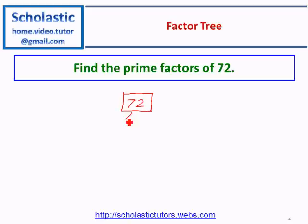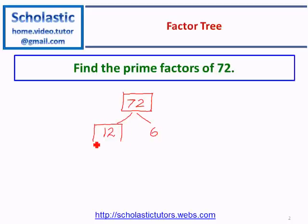72 can be written as 12 times 6. The number 12 is a composite number so we put a rectangle around it, and the number 6 is also a composite number — that means neither is a prime number yet.